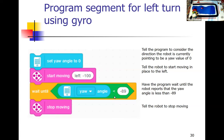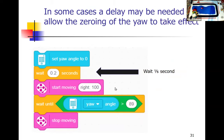To illustrate direction with hands: from your point of view, clockwise rotation is a positive yaw angle, and counterclockwise is a negative yaw angle. One known issue: if set yaw angle to zero is immediately followed by start moving, it sometimes doesn't capture the yaw correctly. The workaround is to put a very short delay — even a tenth of a second — between setting yaw to zero and starting the robot moving.